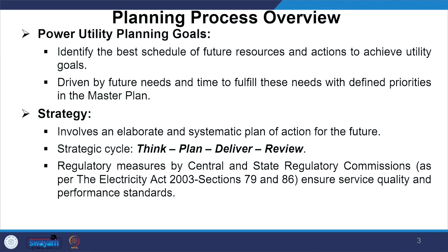When we talk about power utility planning goals, we need to identify the best schedule of future resources and actions to achieve utility goals. A distribution system buys energy for its customers, and energy cost keeps varying every hour, every 15 minutes, or every day. So we need to buy energy at a lower cost so that the energy cost paid by the consumer is minimized. Future needs and time to fulfill them with defined priorities in the master plan become critical questions requiring an elaborate and systematic plan of action.